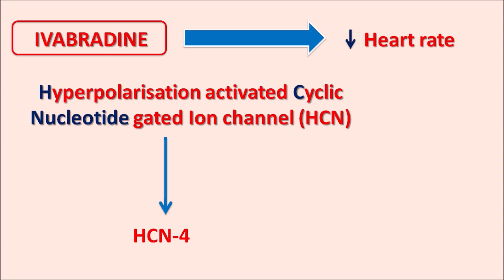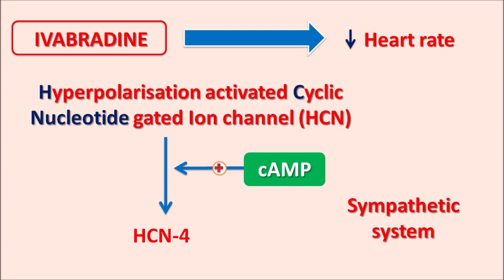Among HCN ion channels, HCN4 is most expressed in cardiac pacemaker cells and is activated under hyperpolarization. During diastole, the pacemaker potential develops and an inward current is generated through these ion channels, which are also controlled by cyclic nucleotides such as cyclic AMP. Cyclic AMP can increase the activity of HCN4, thereby increasing chronotropic activity. The sympathetic system mainly activates cyclic AMP through beta-1 receptors to increase heart rate and force of contraction.